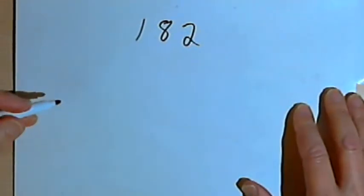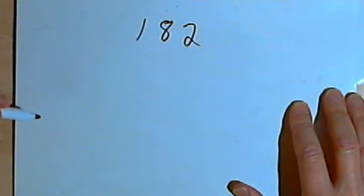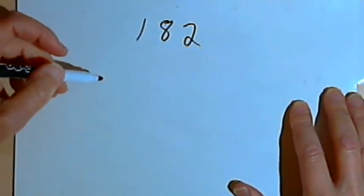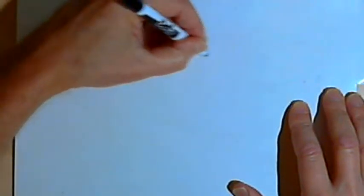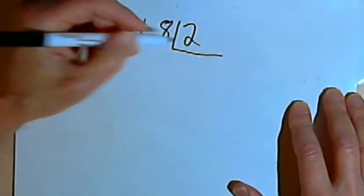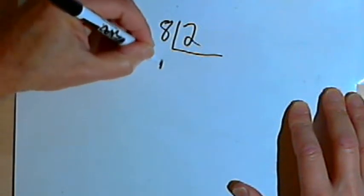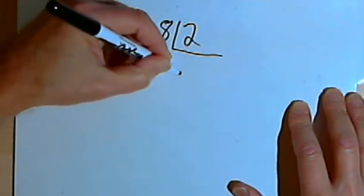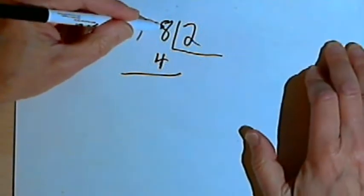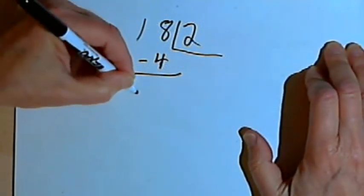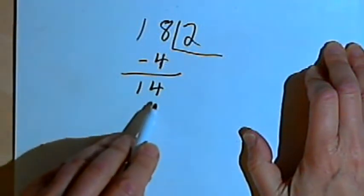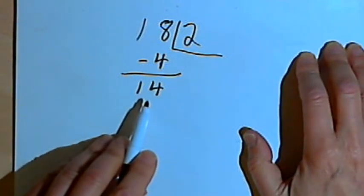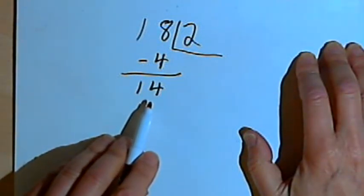Here I've got the number 182 and I want to know whether I can divide it by 7. The way this trick works is: take the last digit, which is a 2, and multiply it by 2. So 2 times 2 is 4. Now take that and subtract it from the other part of the number, the 18. So 18 minus 4 is 14. If you end up with a two-digit number, decide whether you can divide that number by 7. And if you can, then the original number is divisible by 7.